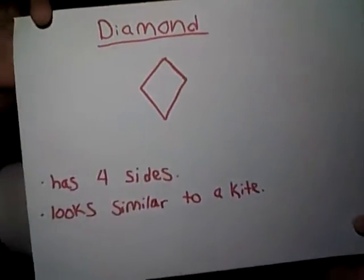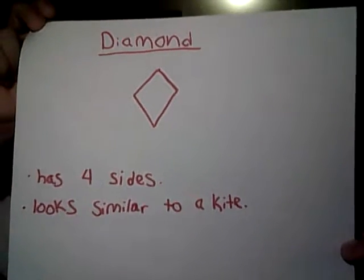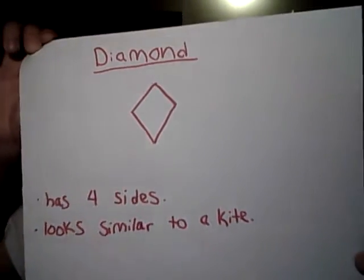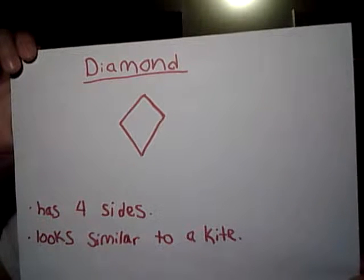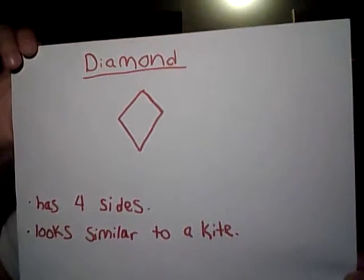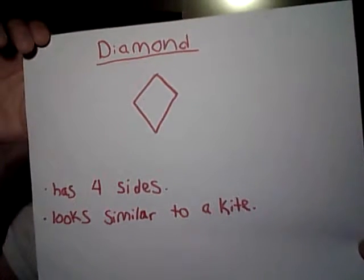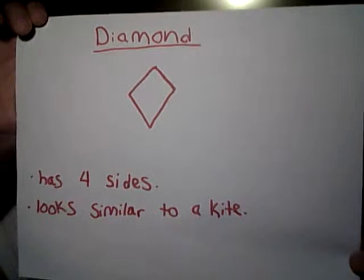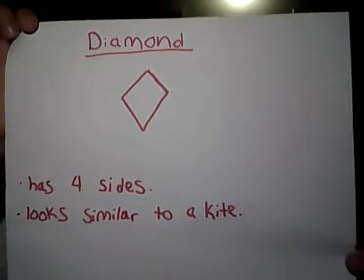Next, we have a diamond, which looks like this. You'll write diamond on a new piece of paper or under your rectangle shape. It's spelled D-I-A-M-O-N-D. The diamond also has four sides, and it kind of looks like a kite. You can pause the video, trace the shape with your finger, then draw it out on your piece of paper where you wrote diamond.